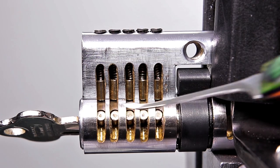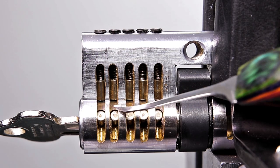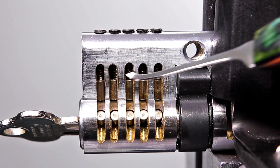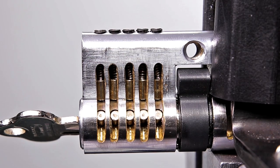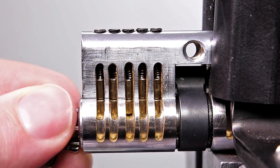You can see that the pins on the bottom here are sitting very flush with this portion of the lock, and all the pins on the top are sitting very flush with this portion of the lock here as well. So what exactly is going on?